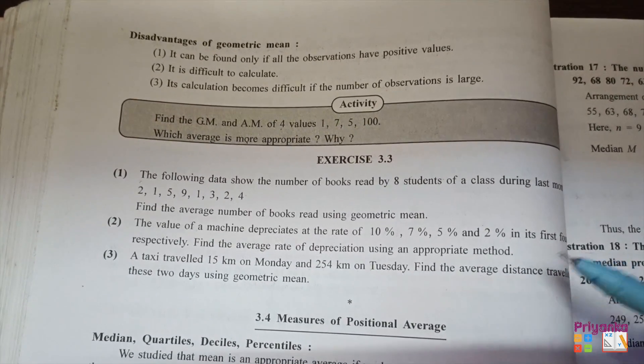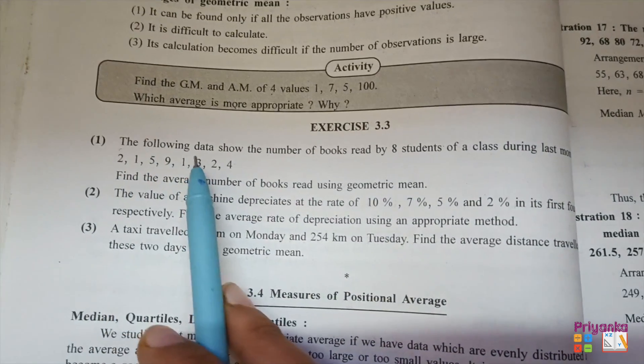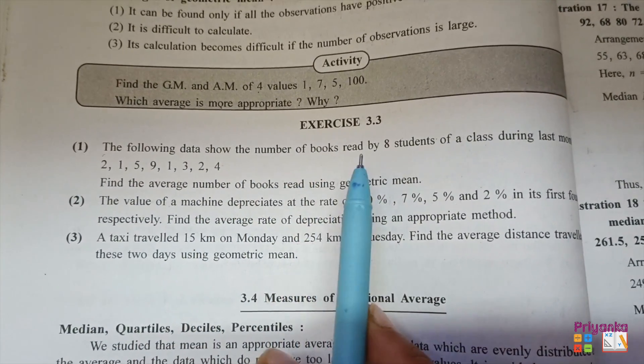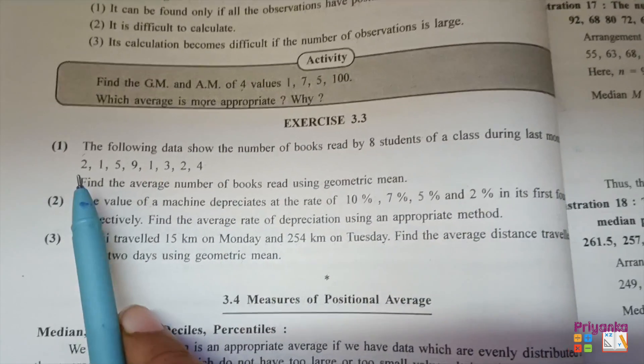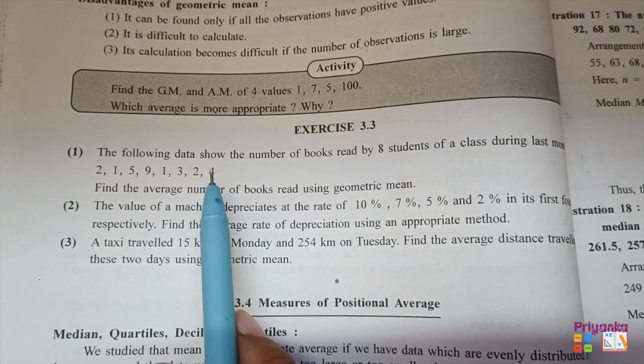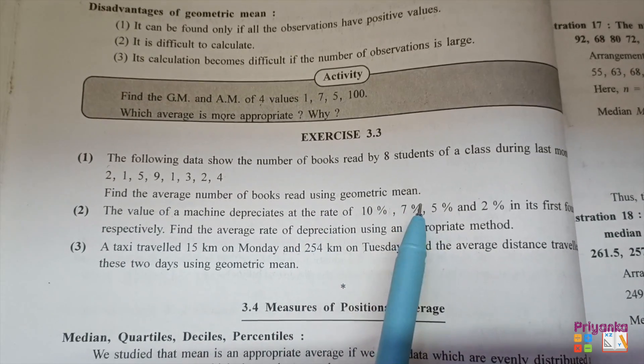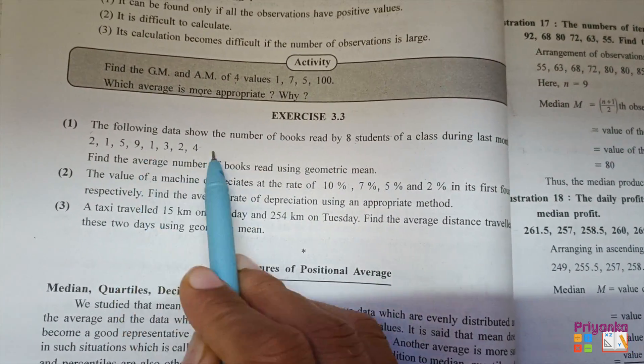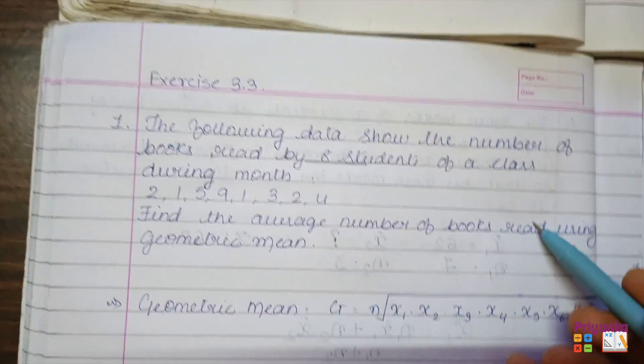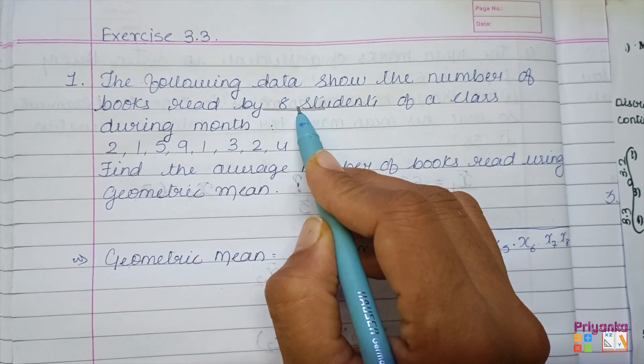Let's start with the first one. The following data shows the number of books read by eight students of a class during the last month: 2, 1, 5, 9, 1, 3, 2, 4. Find the average number of books by using geometric mean. Now for the geometric mean, we need n and x. Let's first take the information in the book. As eight students' information is given, which will be denoted as n.